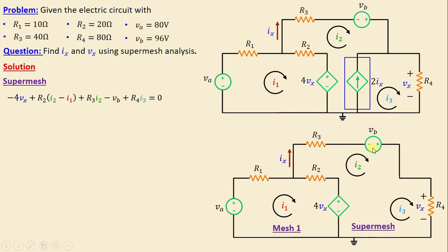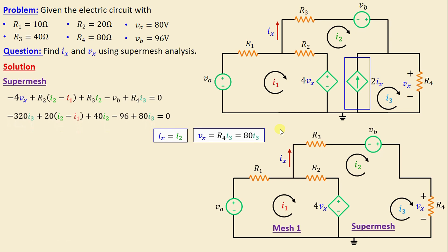Applying KVL in the super mesh, we write: negative 4vx plus R2(i2 − i1) plus R3·i2 minus VB plus R4·i3 equals zero. We note that ix equals i2, and by Ohm's law vx equals R4·i3 equals 80·i3. Substituting numerical values and the expression for vx, we obtain: 56·i2 − 20·i1 − 240·i3 − 96 = 0. This is Equation 1.